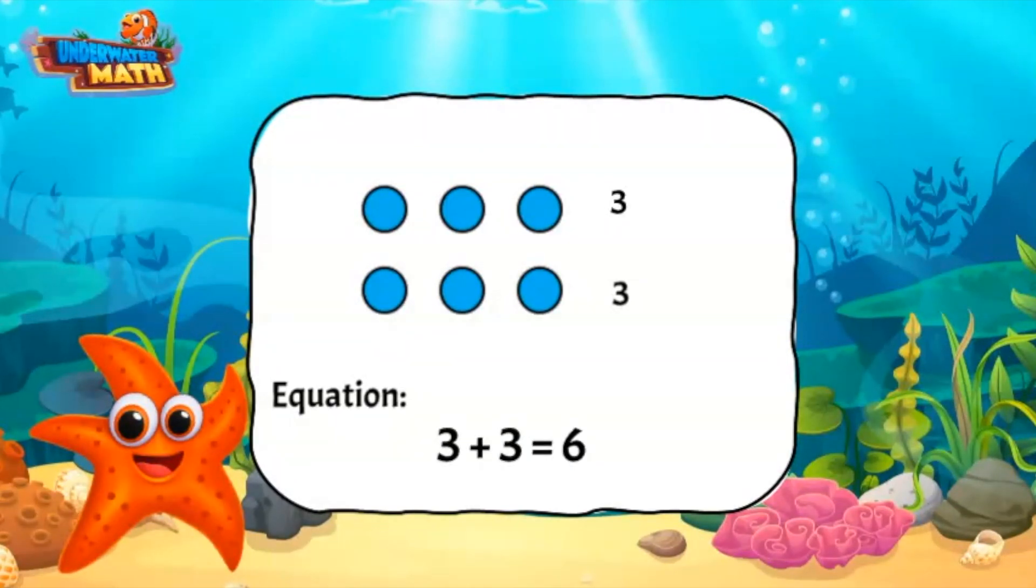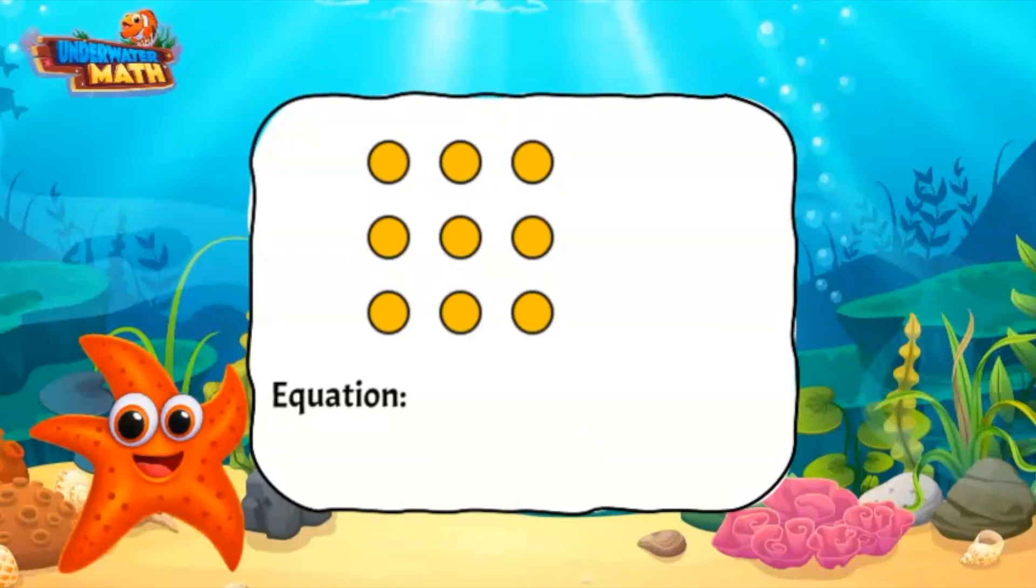I add three two times because there are two groups. Here is our last example. This array has three groups with three pieces in each group. The equation to represent the array is 3 + 3 + 3 = 9.